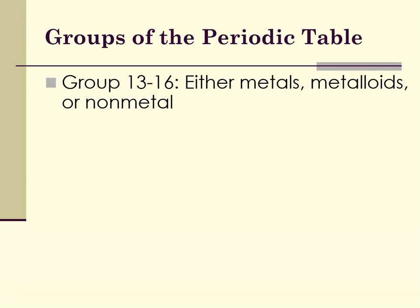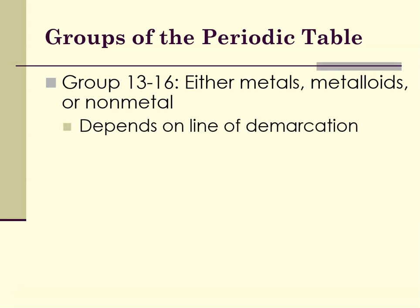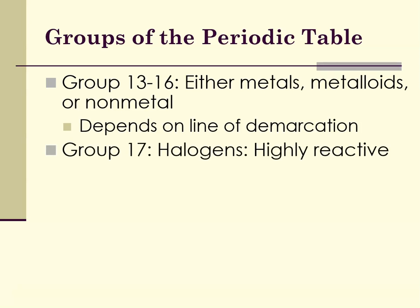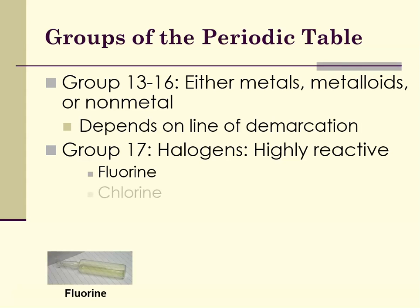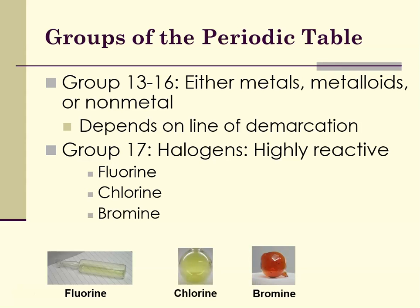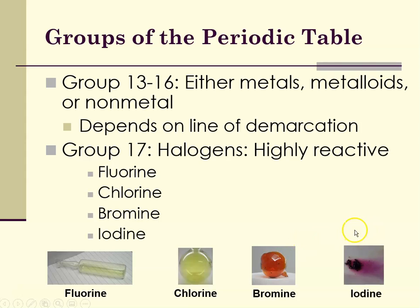Groups 13 through 16 are going to be either metals, metalloids, or nonmetals, depending on their location with regard to the line of demarcation. Group 17's halogens are highly reactive — there's fluorine gas, chlorine gas, bromine which is a gas but very willing to become a liquid, and iodine, which is a solid that sublimes to a gas very readily.